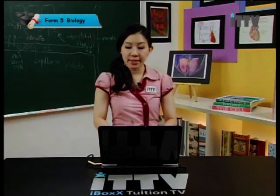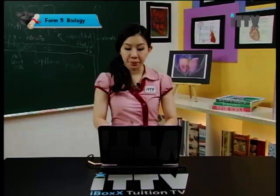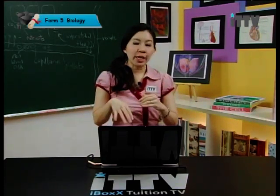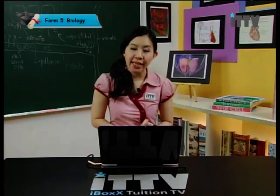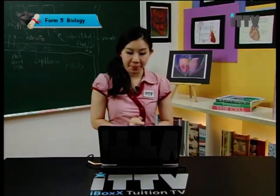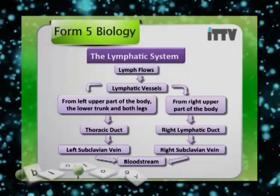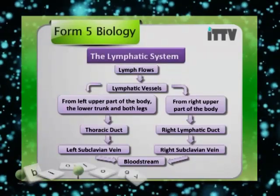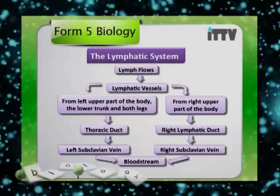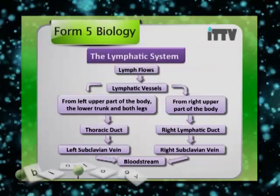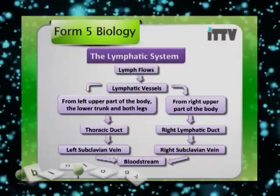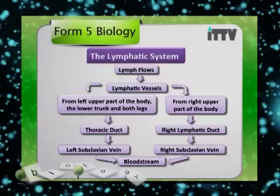Let's have a look at this a little bit clearer with the flow chart, which will help your understanding of the movement of lymph through the lymphatic system. Lymph from the lymphatic vessels throughout the whole body drains into two major lymphatic vessels, which would be the right lymphatic duct and the thoracic duct.